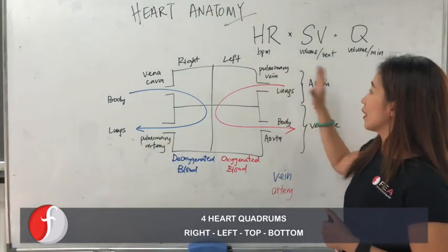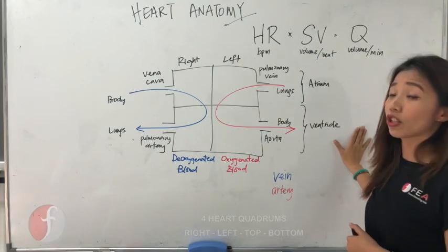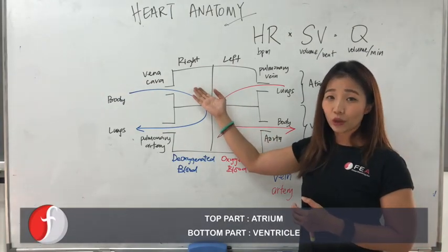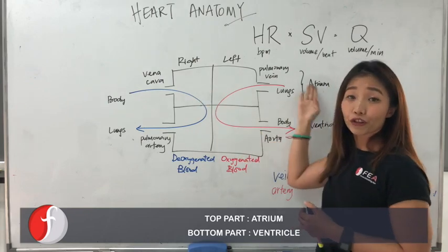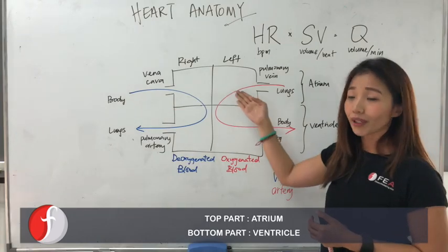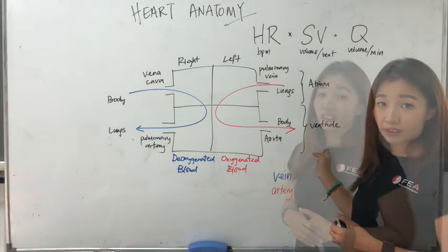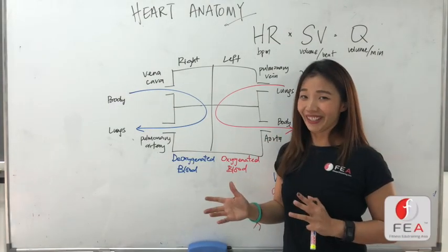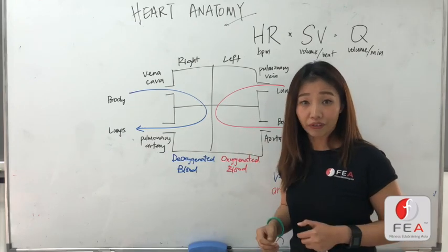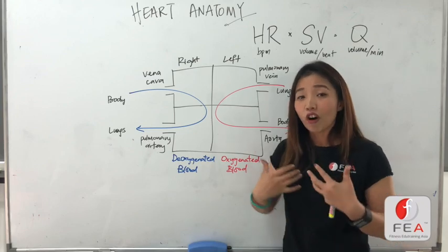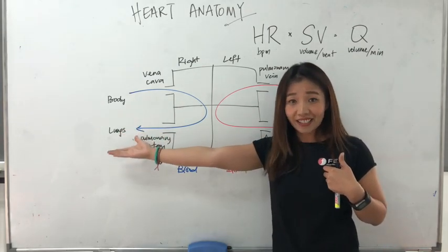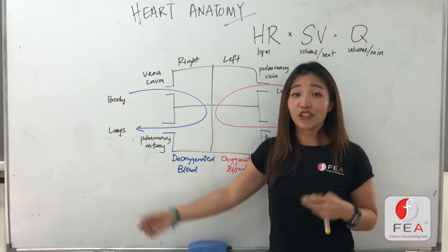The top part is known as the atrium, and the bottom part is known as the ventricle. So you will easily know that this is known as your right atrium, and this is called your right ventricle. The same goes to this side — you have your left atrium, and also your left ventricle. Now, the video is not flipped. When we talk about right and left, we are looking at someone's heart from the front view. So imagine putting yourself on the wall, and you see that this side of your heart is actually your right side, and this side is actually your left side.